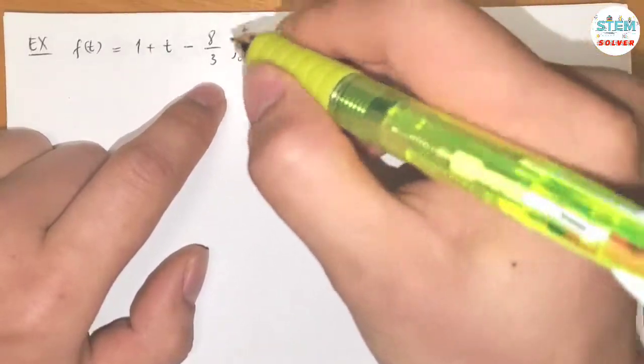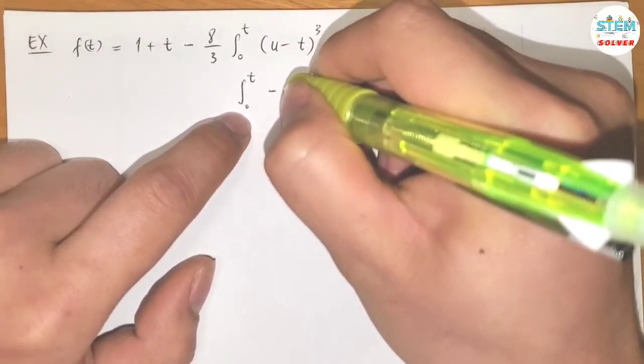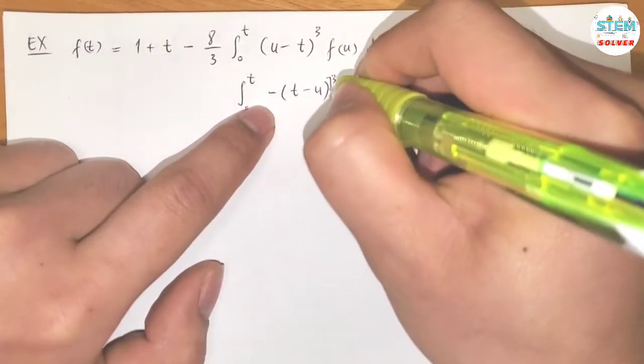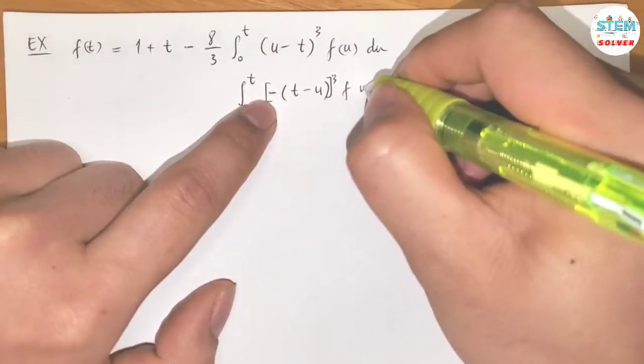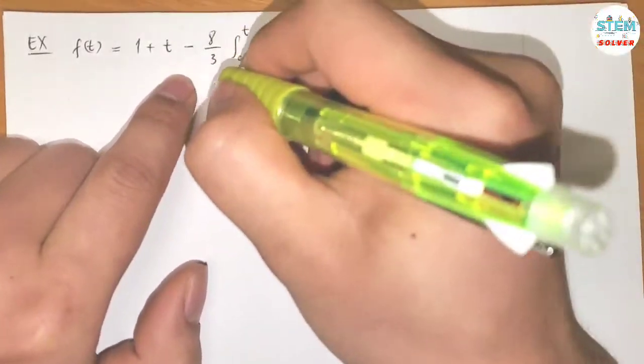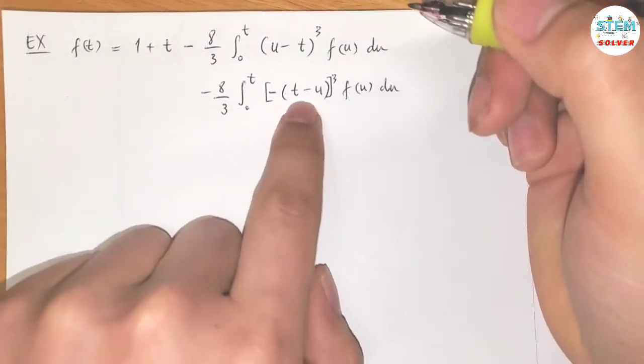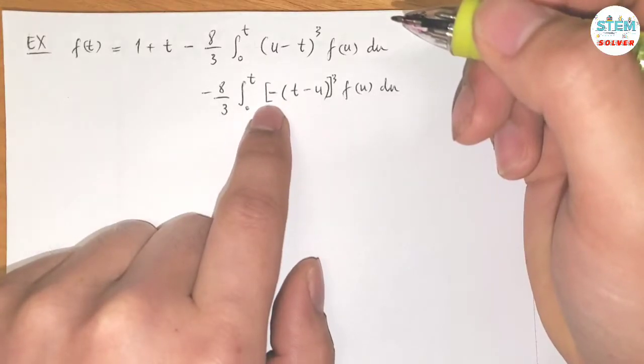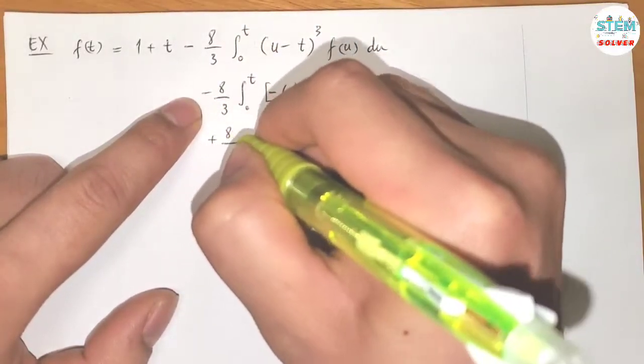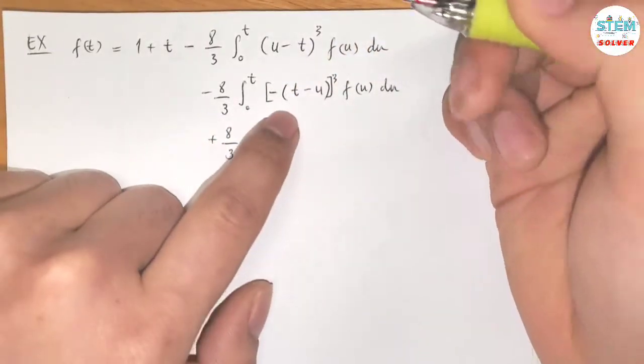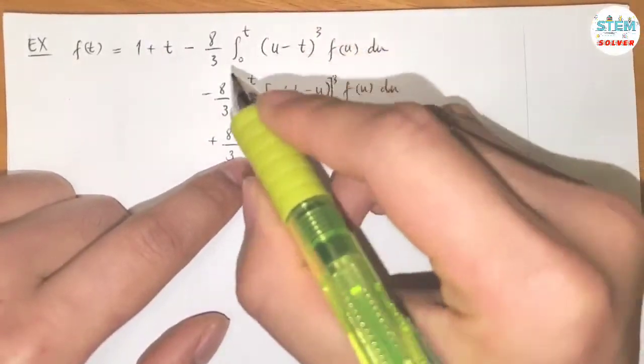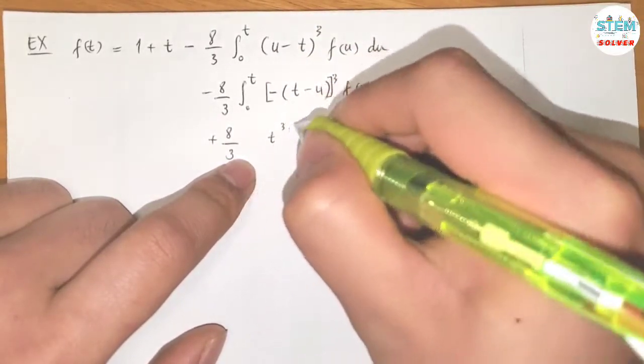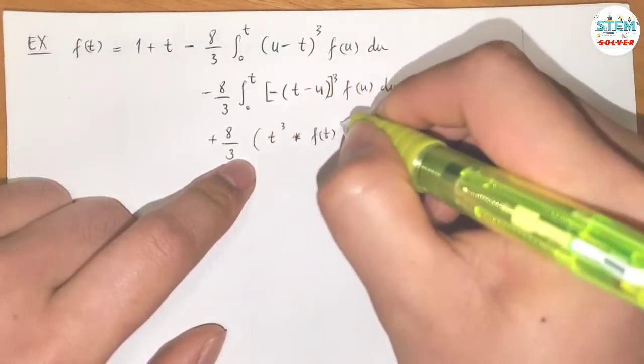So if it's switched position, I would have integral from 0 to T, negative of - let me factor out negative 1 - and I have T minus U cubed, applied to the negative as well. And F of U, DU. Don't forget to bring down the negative 8 thirds. So for this one, negative 1 cubed becomes negative 1, and negative 1 with the negative in front makes it positive 8 thirds.